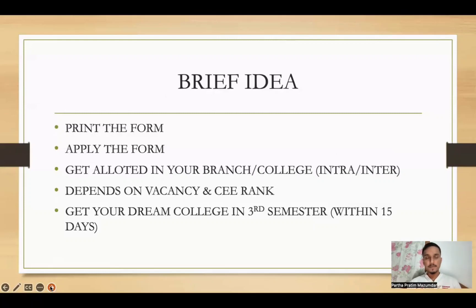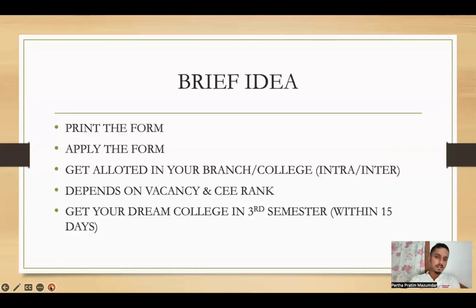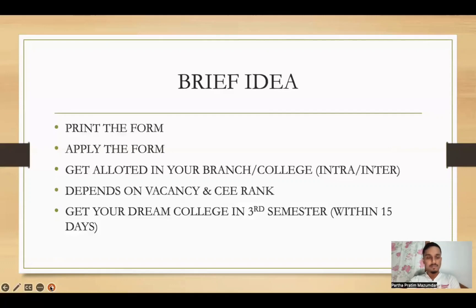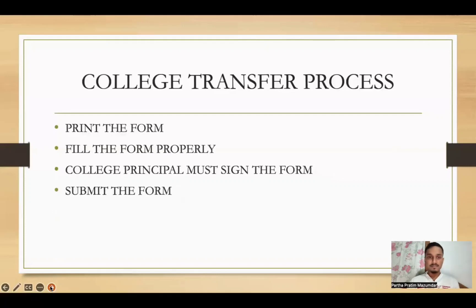If you have a third semester class, you will have a window of within 14 days — that is within 2 weeks. It depends on the vacancy and the CWR rank. So you will need a full rank of CWR. If your rank is around 3,000, 4,000, or 5,000, it may be difficult, but definitely if there is a vacancy you can still get in. So get your dream college in the third semester within 14 days.